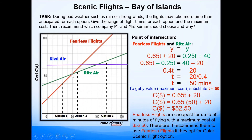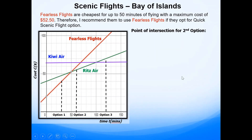It was harder to read the exact value from the graph — we would have been guessing the number. Therefore I recommend them to use Fearless Flights if they opt for the quick scenic flight option, as it's the cheapest. Even if the weather is bad, they will have a maximum cost of up to $52.50.